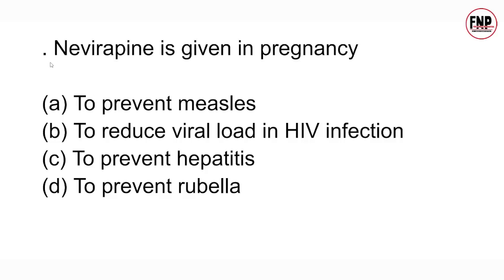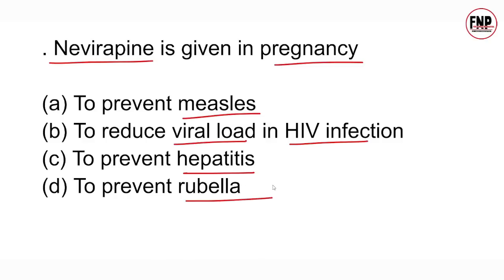Question 29: Nevirapine is given in pregnancy — why? Option A: To prevent measles. Option B: To reduce viral load in HIV infection. Option C: To prevent hepatitis. Option D: To prevent rubella. Correct answer is Option B। Nevirapine pregnancy के दौरान administer करने से HIV virus का viral load कम हो जाता है। साथ ही यह mother to child vertical transmission of HIV को prevent करती है।